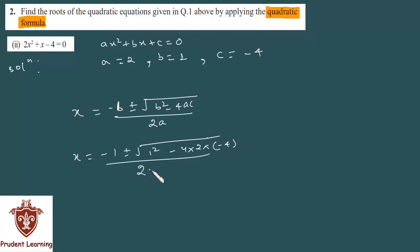upon 2 into a, which is 2. This gives us minus 1 plus minus under root of 1 minus of minus becomes plus, 4 times 4 is 16, 16 times 2 is 32 over 2 times 2 is 4. Which implies